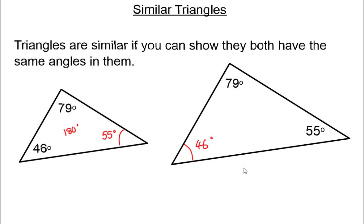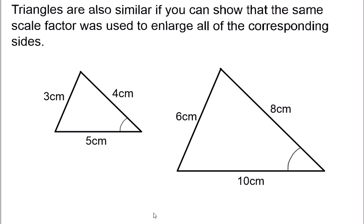Another way of doing it is to prove that the same scale factor was used to enlarge all of the sides. When you enlarge a shape, you don't add centimetres on to make them longer or take away centimetres to make them smaller — you're only allowed to multiply and divide. If you're making the shape bigger, you multiply; if you make the shape smaller, you divide. You've got to multiply or divide by the same number for all sides of the shape, and that number is what we call the scale factor.